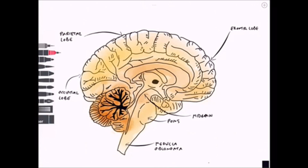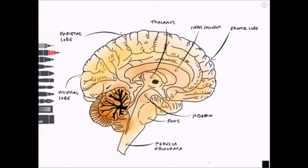Above that we have an area known as the midbrain, which is part of the brainstem. Superior to that we have a very distinctive area called the corpus callosum, important for sharing information between the two hemispheres. Slightly posterior to that, almost in the centre of this section, is the thalamus, which is the important relay between the cortex and the spinal cord.